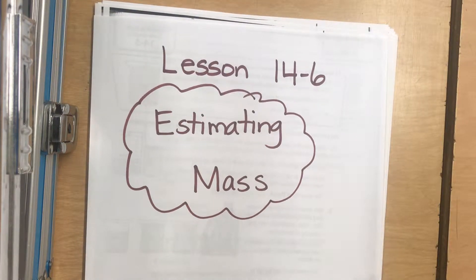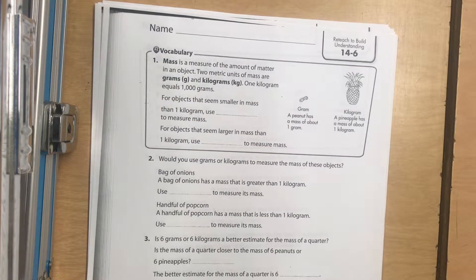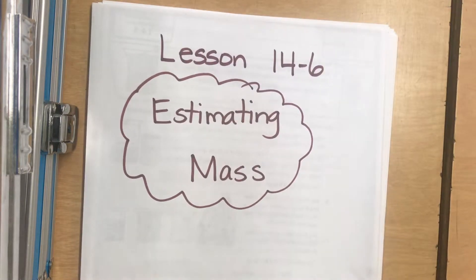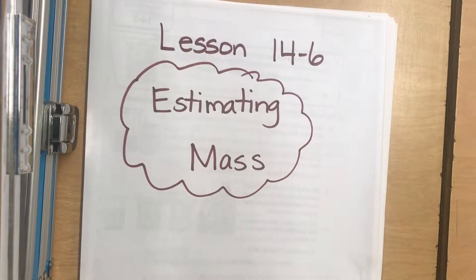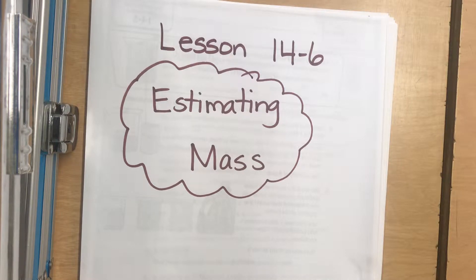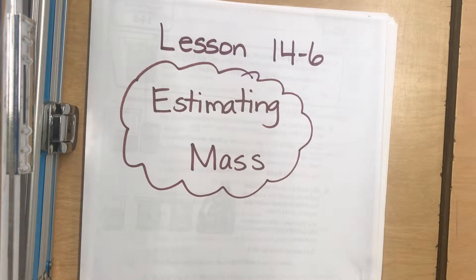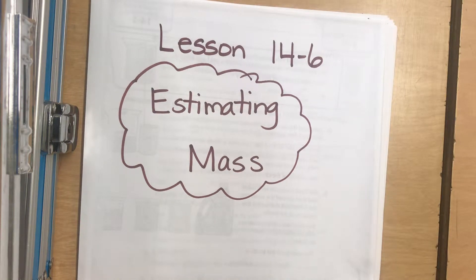We're going to do lesson 14-6, estimating mass. Mass is basically how much something weighs. Scientifically, mass does not take into account gravity. How much you weigh on Earth is different than how much you weigh on the moon because there's a different amount of gravity on both. But mass is not affected by gravity, so how much mass you have on Earth is the same amount of mass you have on the moon. For our purposes, just think of it as weight, but know that mass is a little more advanced because gravity doesn't affect it.